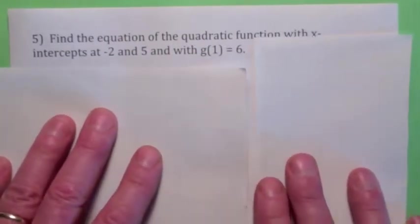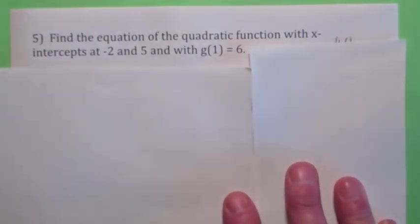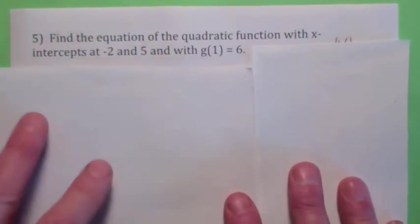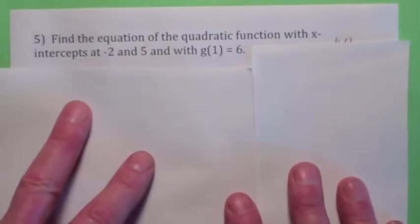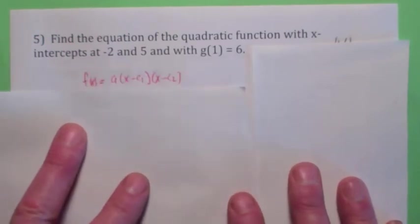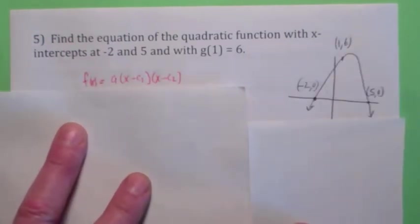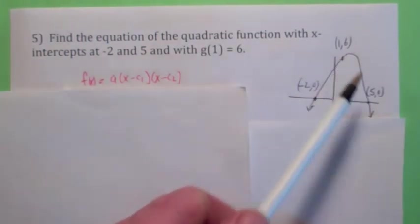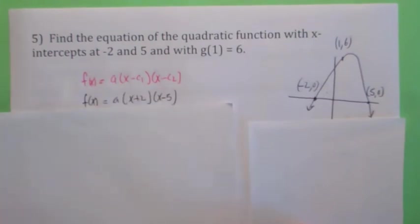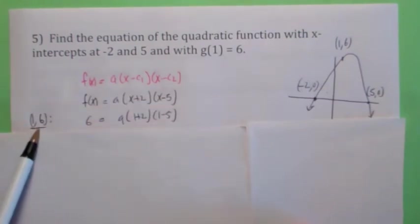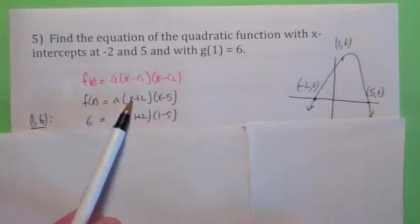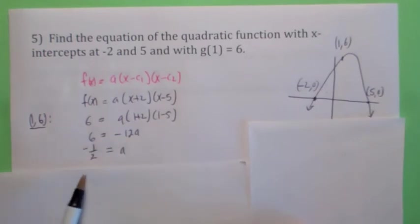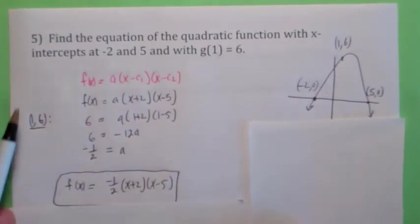You may not always be given a graph — you may be given information about the function. Here I'm giving you two x-intercepts and a point. Use the factored form. It's always a good idea to draw a picture to see what's going on. Plugging in the x-intercepts gives the factors. Then plug in the point (1, 6): y = 6, x = 1 gives a(3)(−4) = −12a = 6, so a = −1/2. The function is f(x) = −½(x − r₁)(x − r₂).